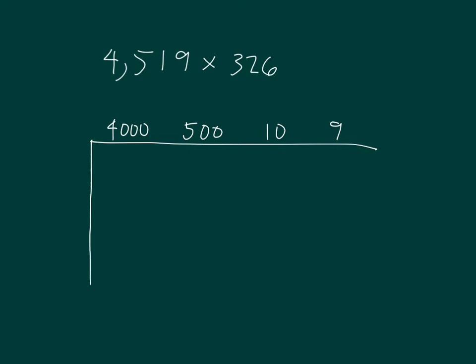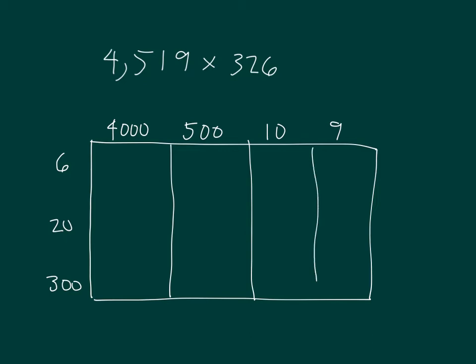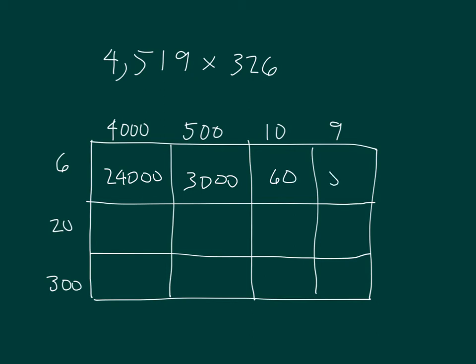4,519. 6, 20, 300. 6 times 4,000 is 24,000. 6 times 500 is 3,000, 60 and 54.